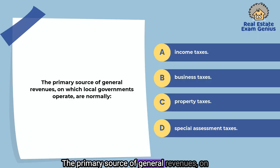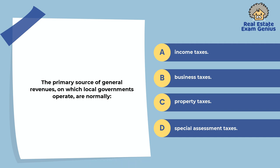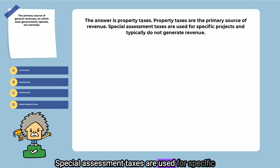The primary source of general revenues on which local governments operate are normally: income taxes, business taxes, property taxes, or special assessment taxes. The answer is property taxes. Property taxes are the primary source of revenue. Special assessment taxes are used for specific projects and typically do not generate general revenue.